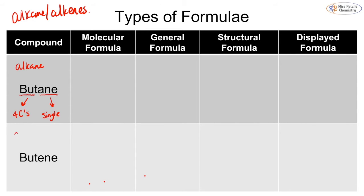We also have butene, which is an alkene, meaning it has a double bond. We can tell that by the name — when it ends in 'ene' it means there is at least one double bond. The 'but' again means there are four carbons. Now we can write out the molecular, general, structural, and displayed formulas for these compounds.